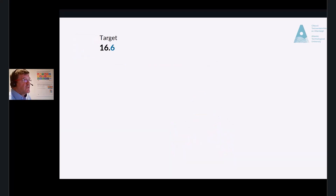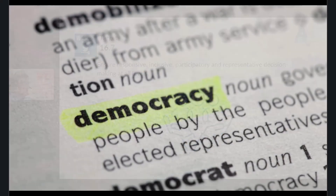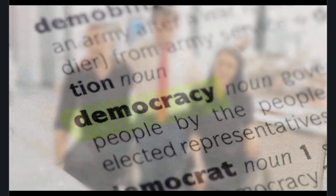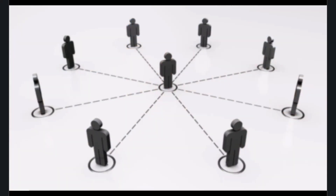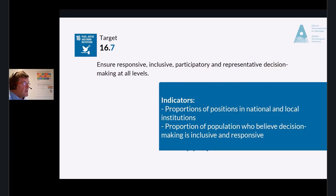Target 16.7: Ensure responsive, inclusive, participatory and representative decision making at all levels — the key fundamental underlying principle of democracy. Globally, but also here in Ireland, what percentage of those in decision-making positions have a disability or are from a marginalized community? How can we achieve equality if so many are underrepresented in decision-making forums? The indicators are the proportion of positions in national and local institutions, and the proportion of population who believe decision making is inclusive and responsive.